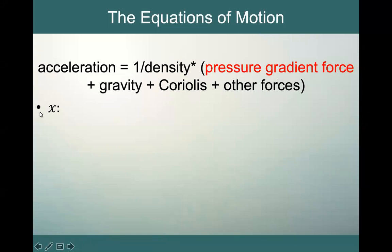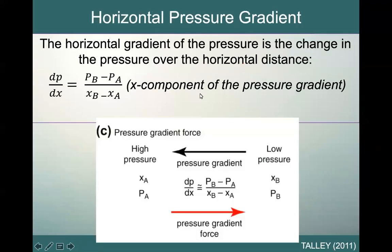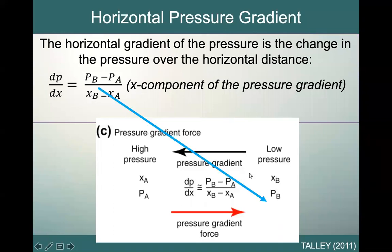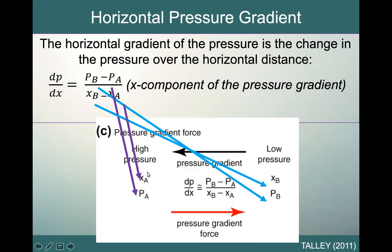First, we'll look just in the X direction. To review, we remember that in the X direction, we have a horizontal pressure gradient. The horizontal gradient of the pressure is the change in the pressure over the horizontal distance, so that would be dp/dx for the X direction. To find this, we're going to take p_b minus p_a and divide that by x_b minus x_a, and this will give us our X component of the pressure gradient.